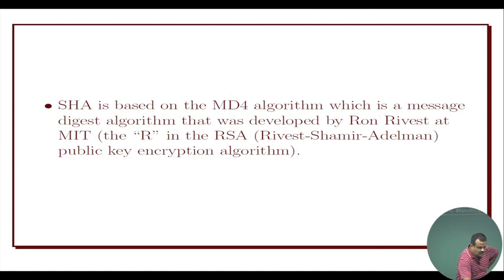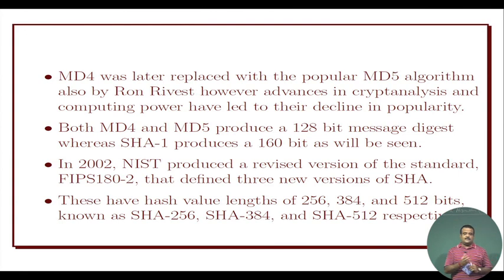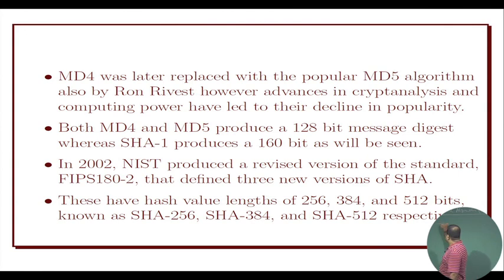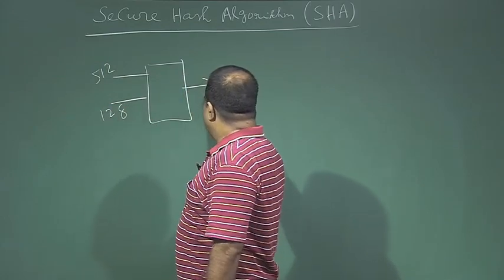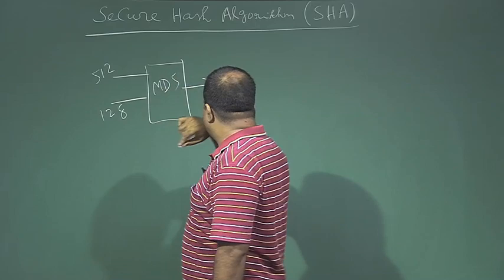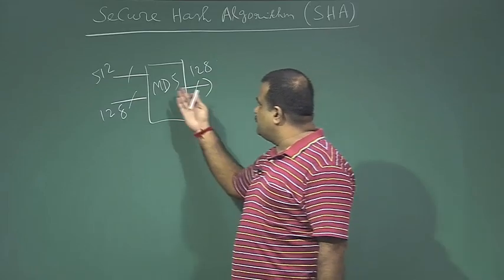For SHA-1, the compression function is based on MD4, which was designed by Rivest at MIT — one of the inventors of RSA. SHA-1 is later derived from MD4. MD4 was replaced by MD5 by Rivest. Both MD4 and MD5 take a 512-bit input and a 128-bit input and give a 128-bit output, so the hash digest from MD4 or MD5 is 128 bits.